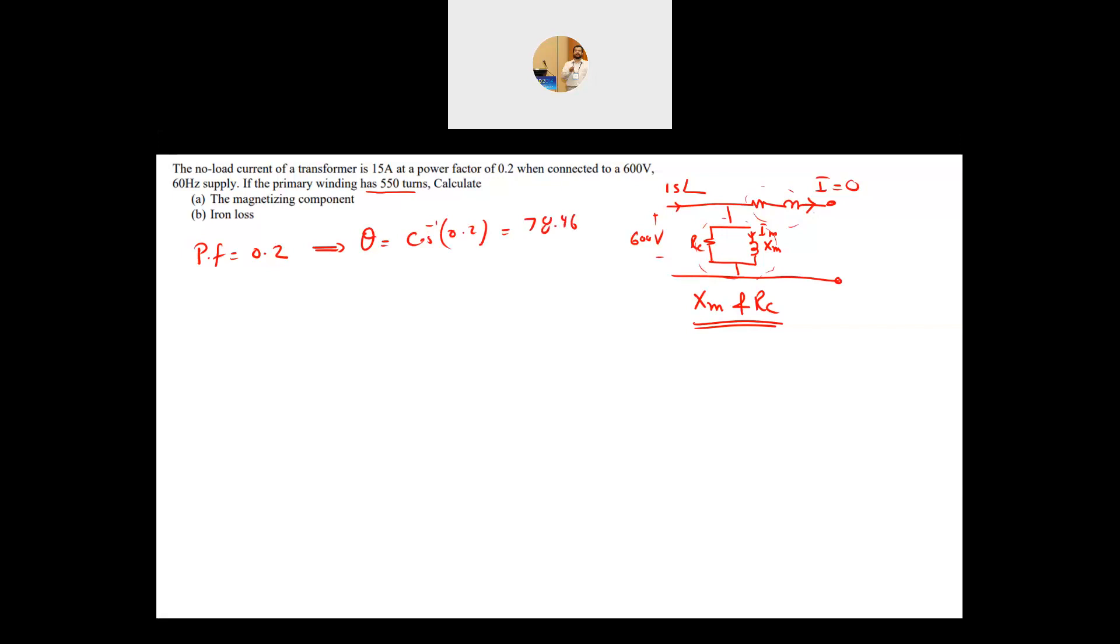What is this power factor? It's the angle between the voltage and the current. Since this is inductive, we can assume that the voltage has an angle of zero. So your current I will be equal to 15 amp at an angle of minus 78.46. The current lags the voltage. The voltage has an angle of zero and this is lagging, so minus 78.46.